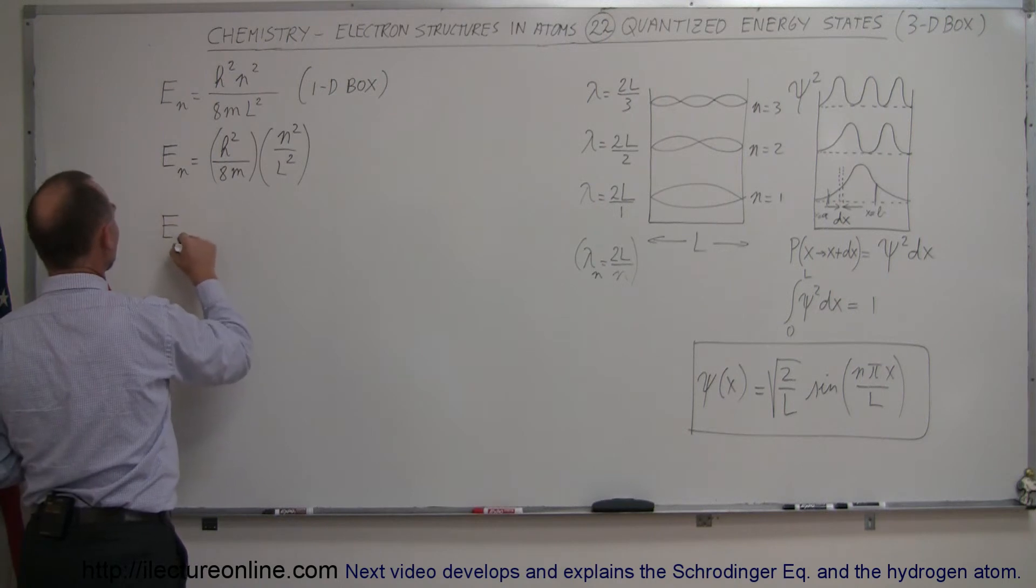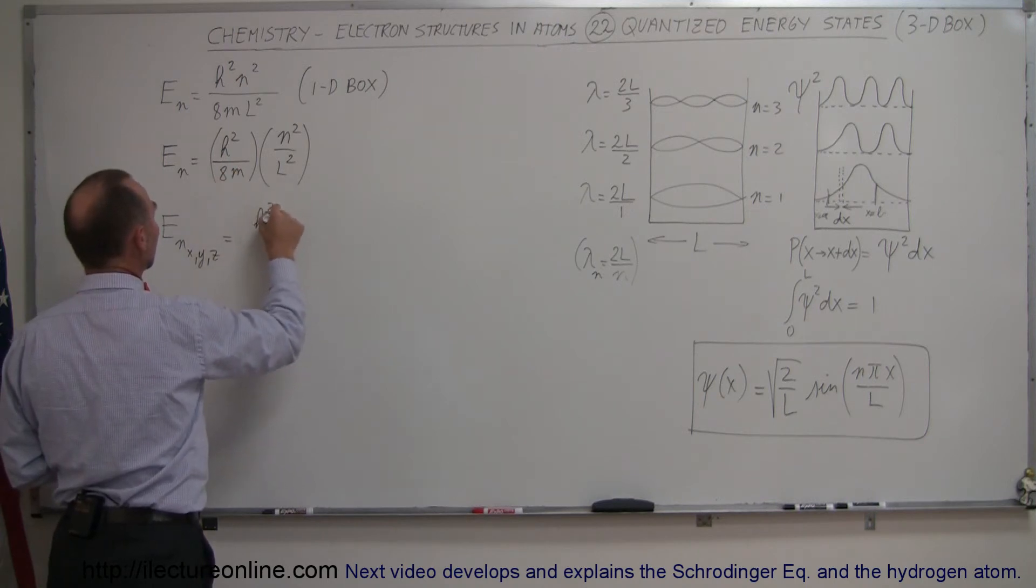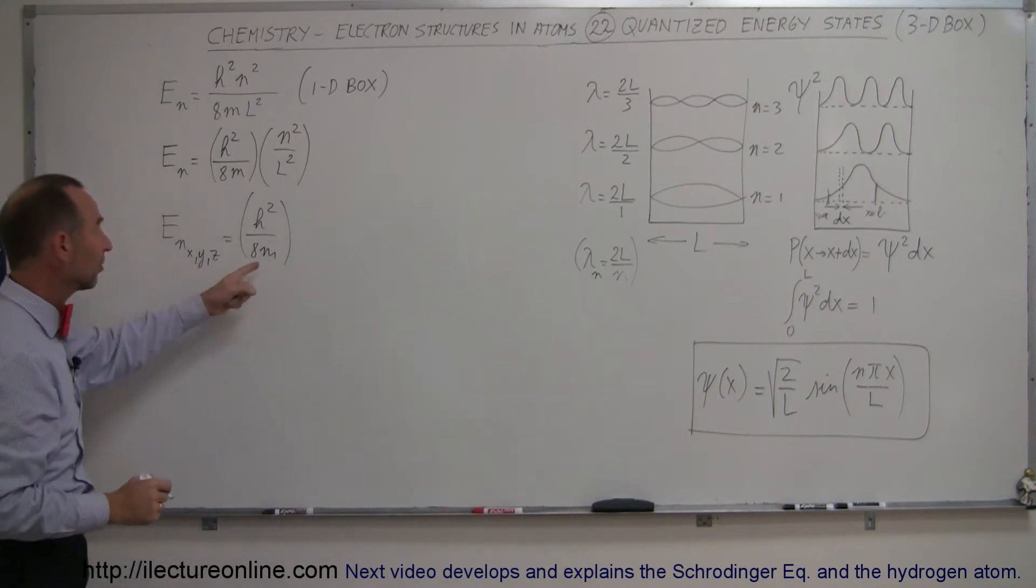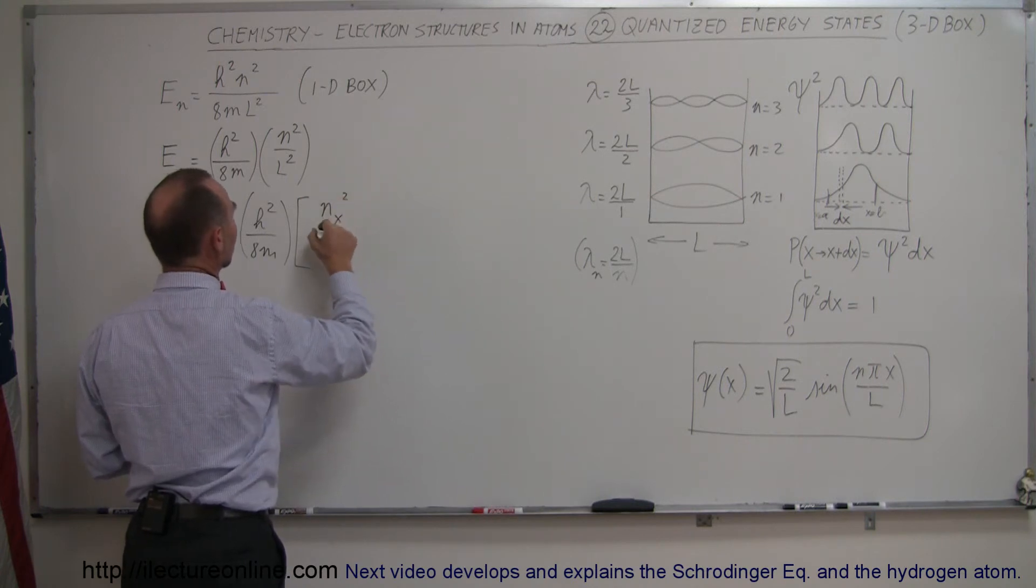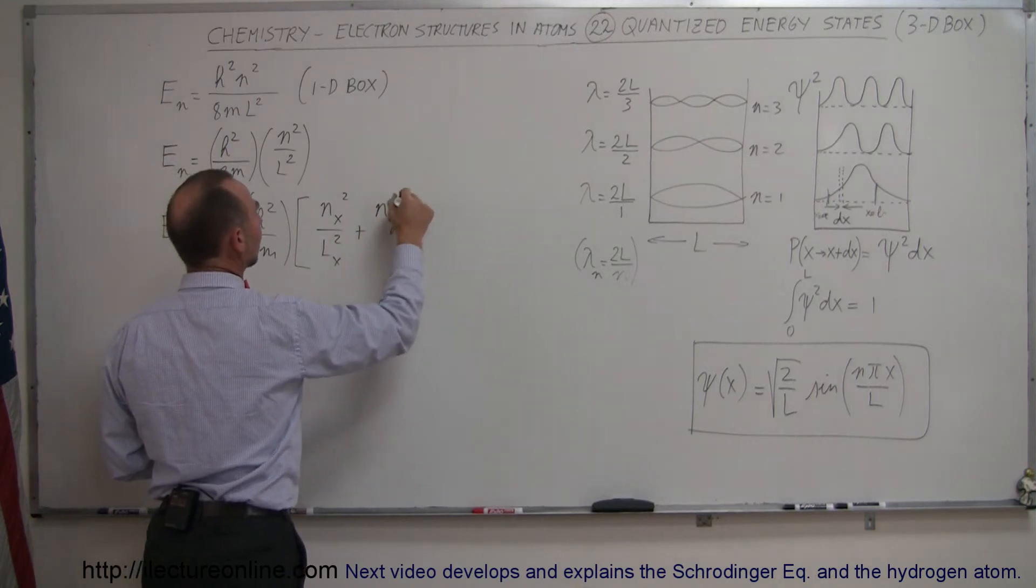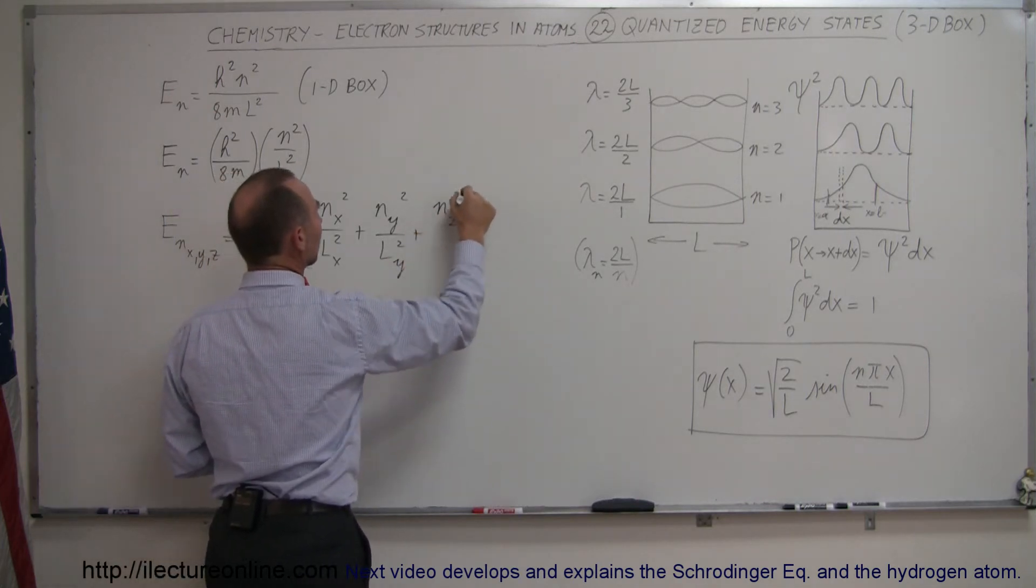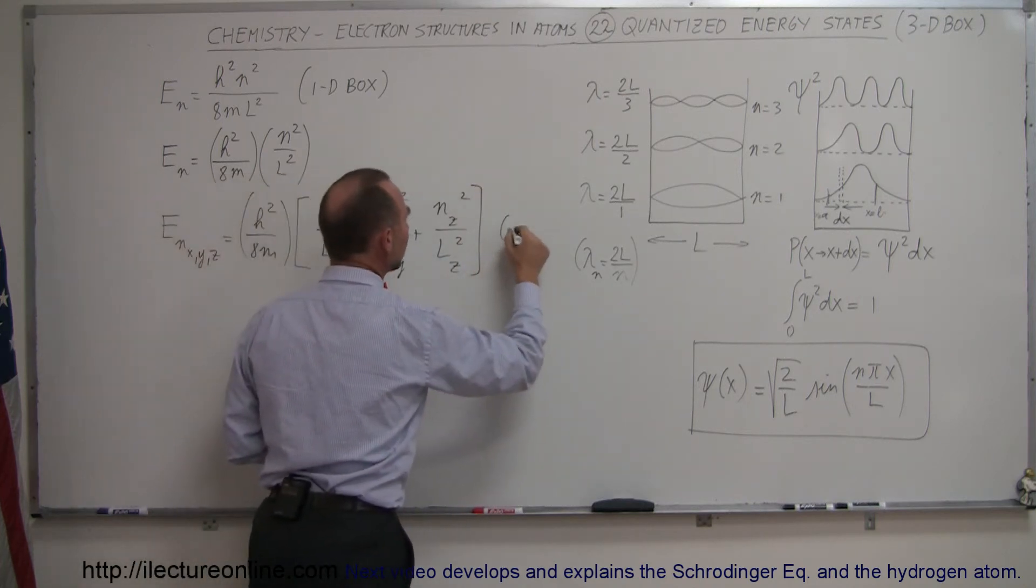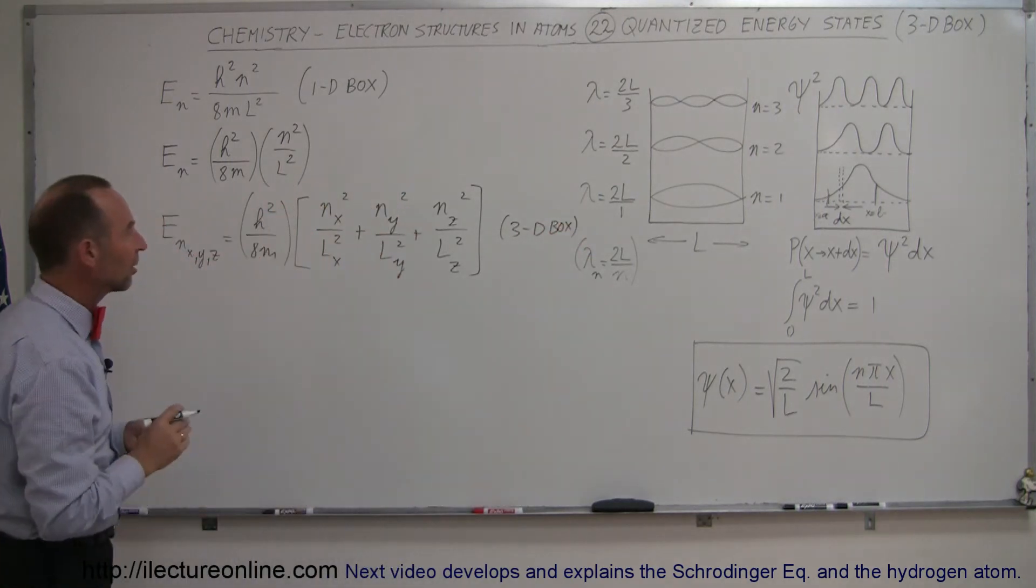We can say that the energy level in the X, Y, and Z direction, so three dimensions, is going to be equal to still H squared over 8m, because it will depend upon, of course, the quantization by Planck's constant and the mass of the electron. But now we're going to multiply that times the energy level in the X direction squared over the length in the X direction squared, plus the energy state in the Y dimension squared divided by the length in the Y dimension squared, plus the energy state in the Z dimension squared divided by the length in the Z dimension squared. And now we have ourselves a 3D box equation, which tells us how the electron can exist on those three levels.